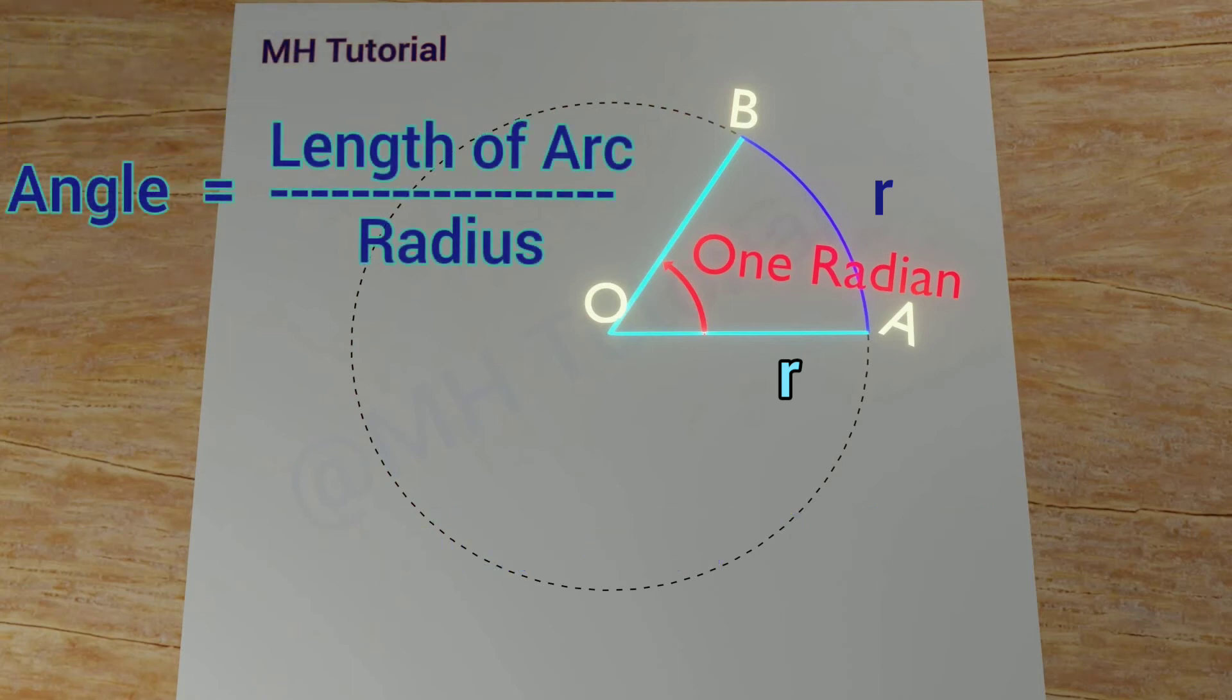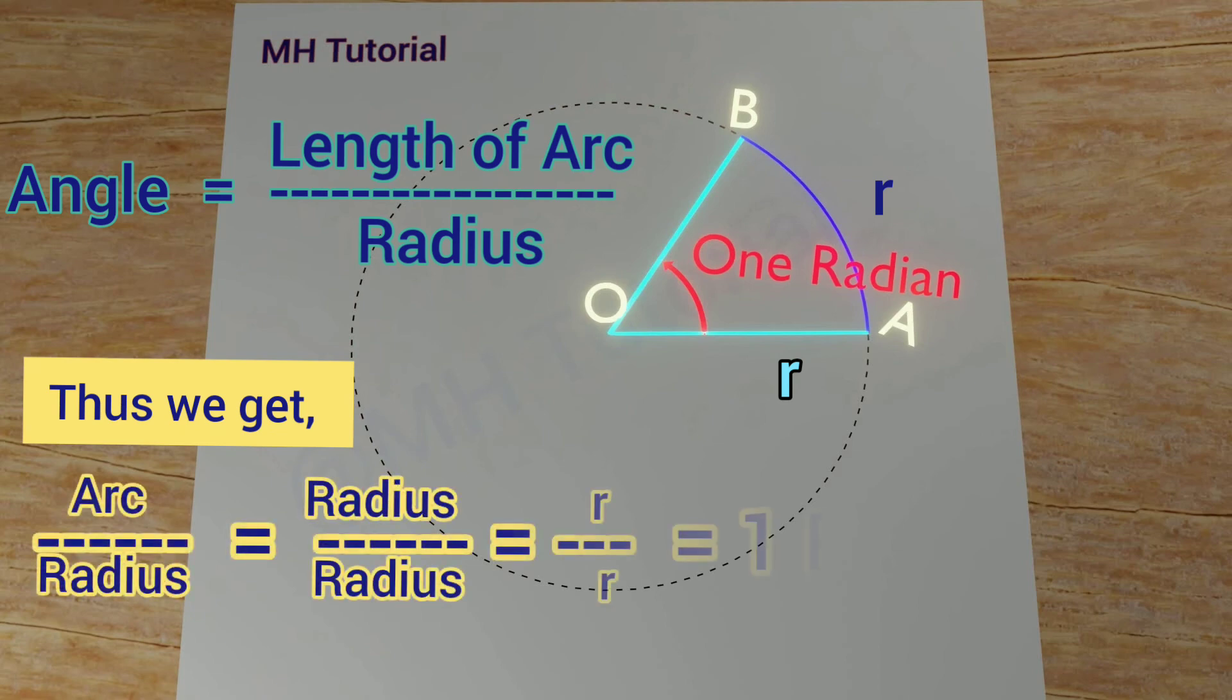Note that angle measured in radians is equal to the ratio of the arc and the radius. Thus, one radian is an angle that a radius-sized arc subtends at its center.